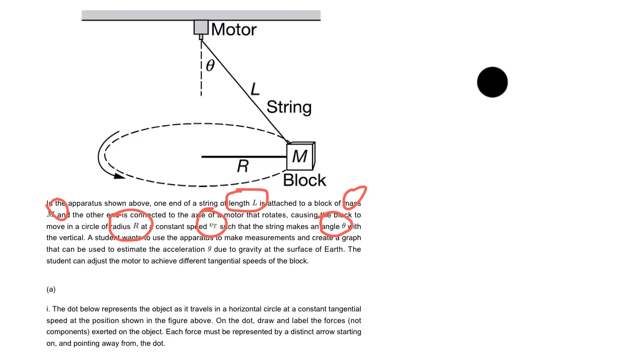The students are going to make measurements and create a graph. At some point you're going to need to make a graph to estimate the acceleration g due to gravity. That's your ultimate goal - to find little g in this problem. They can adjust the motor to make different speeds of the block, so it looks like it's easy to change the speeds.